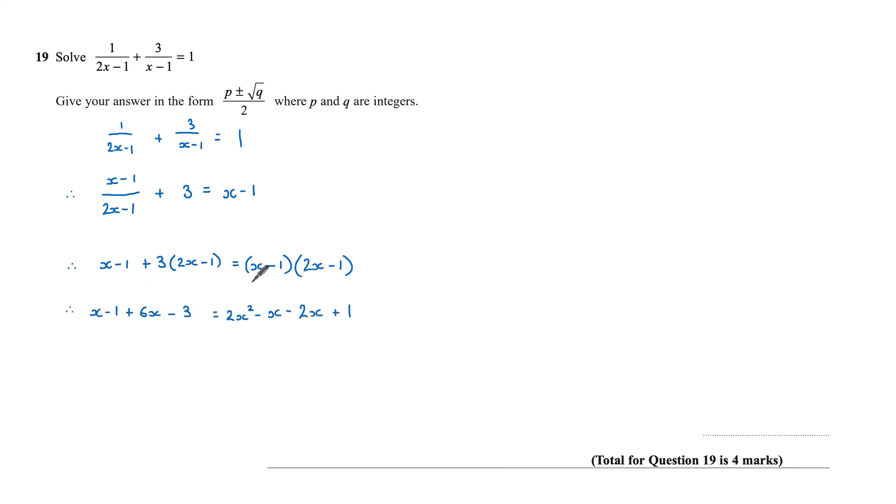On the right-hand side, I'm expanding two brackets. I've got x times this bracket, so that's 2x squared, x times minus 1 is minus x, then minus 1 times 2x is minus 2x, and minus 1 times minus 1 is plus 1.